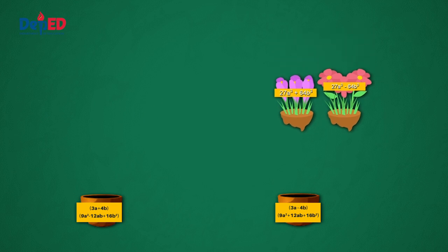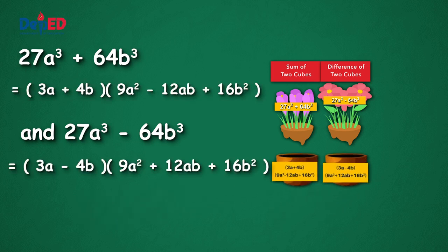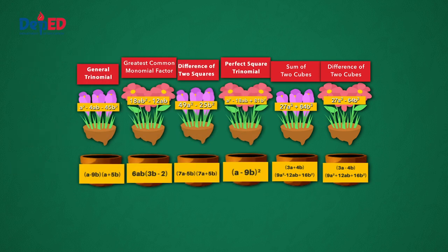How about the last two polynomials? These are the sum of two cubes and the difference of two cubes, and the signs of their factors depend on the operation they used in the special product. These are the polynomials we had factored in the past few lessons, and that would come in handy as we solve some examples of problem solving.